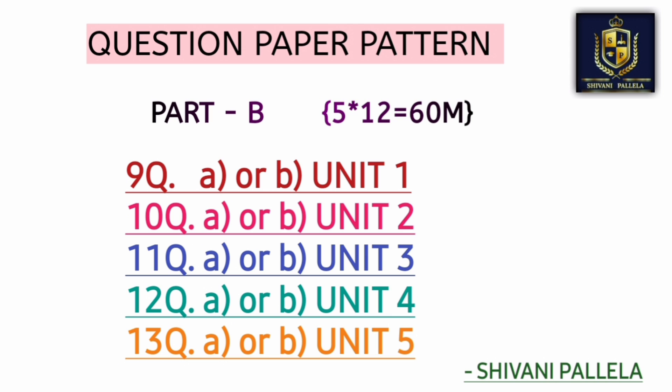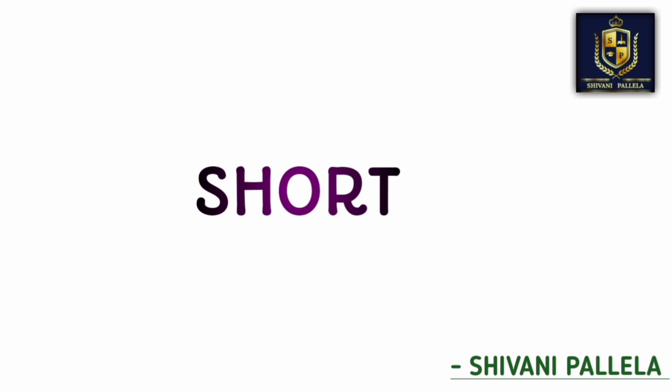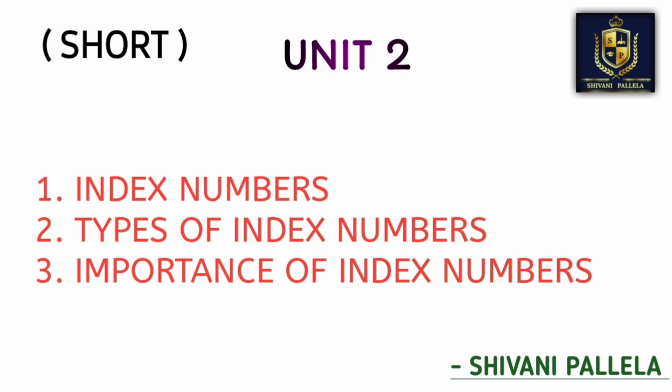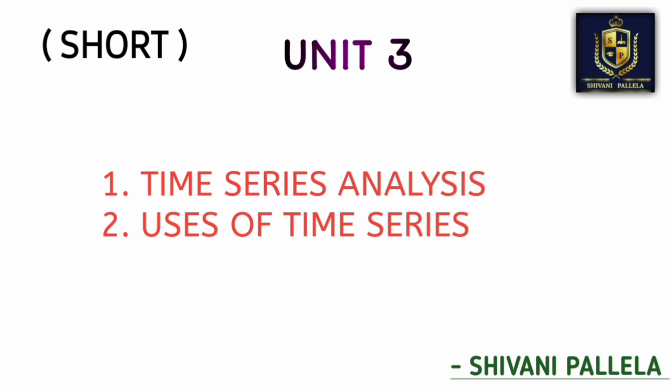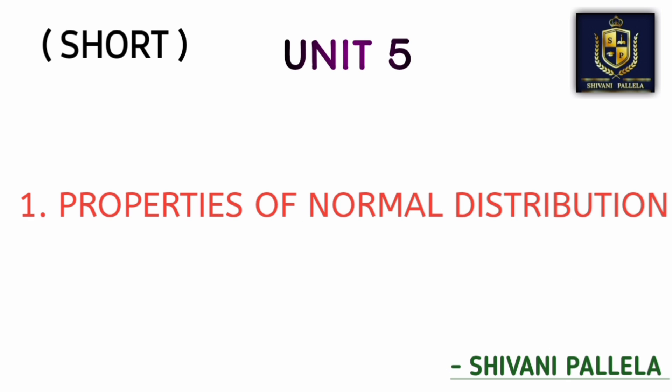Business Statistics is a problematic subject, so try to learn problematic methods first. For theory questions — especially short answers for Part A — from Unit One: Regression Analysis, Correlation, and Regression versus Correlation. From Unit Two: Index Numbers and types of Index Numbers. From Unit Three: Time Series Analysis. From Unit Four: Probability, mutual and non-mutual exclusive events. From Unit Five: Properties of Normal Distribution.